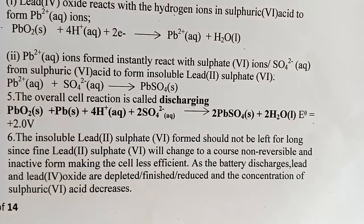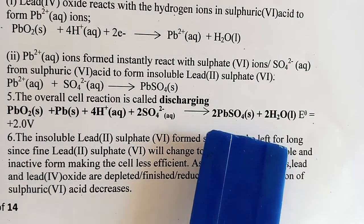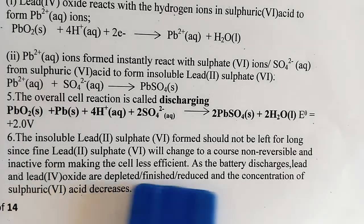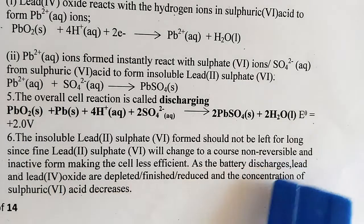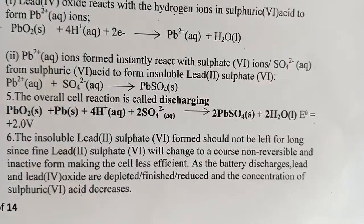As more lead sulfate builds up and the plates get coated, there will be no flow of current. At this point we say the battery is exhausted and requires recharging. If it is left for a long time without recharging, the coat becomes permanent, the process will be non-reversible, and the battery will be completely destroyed.